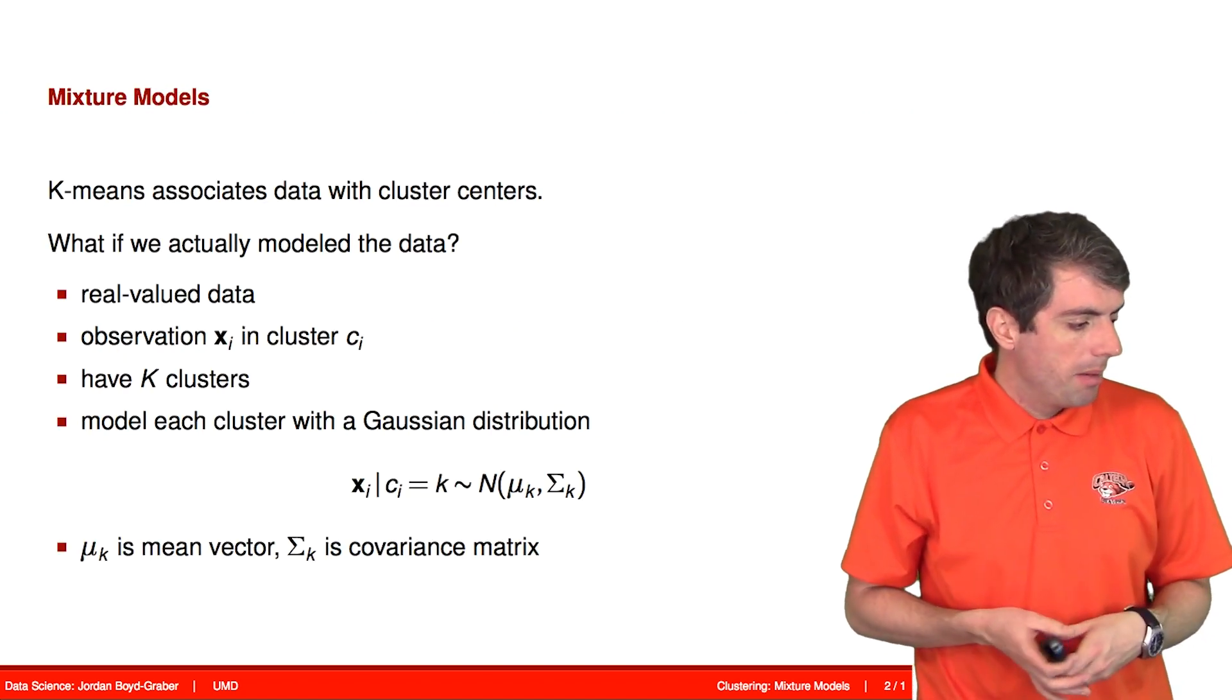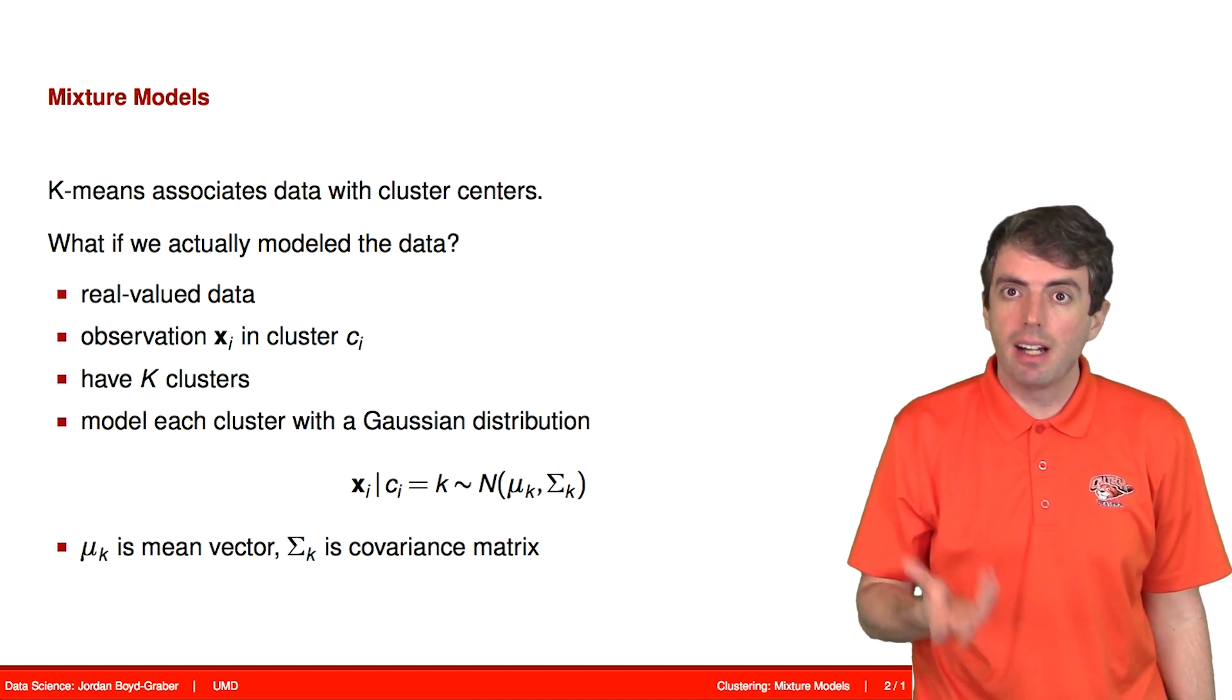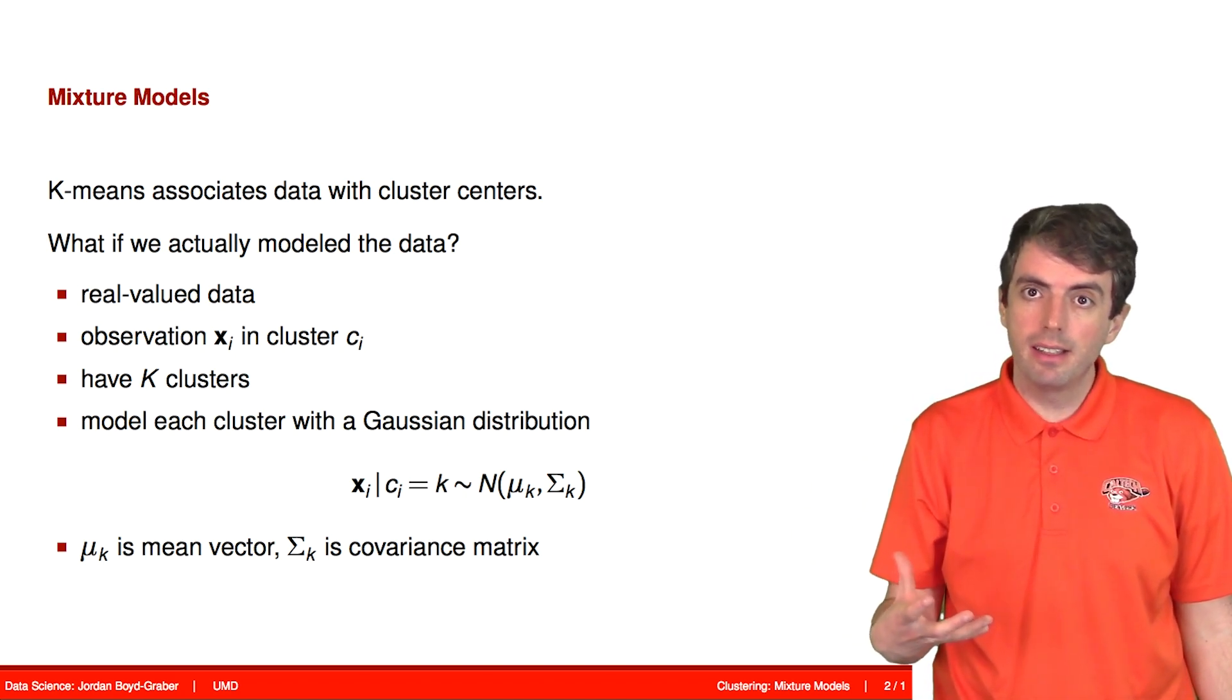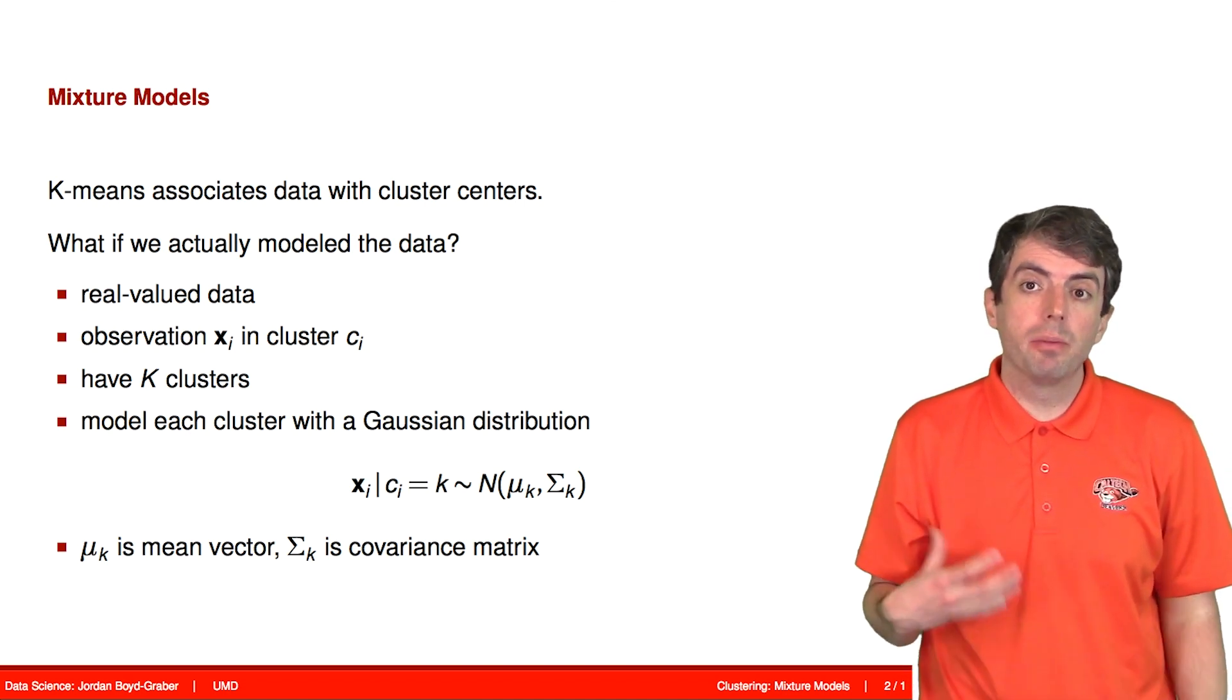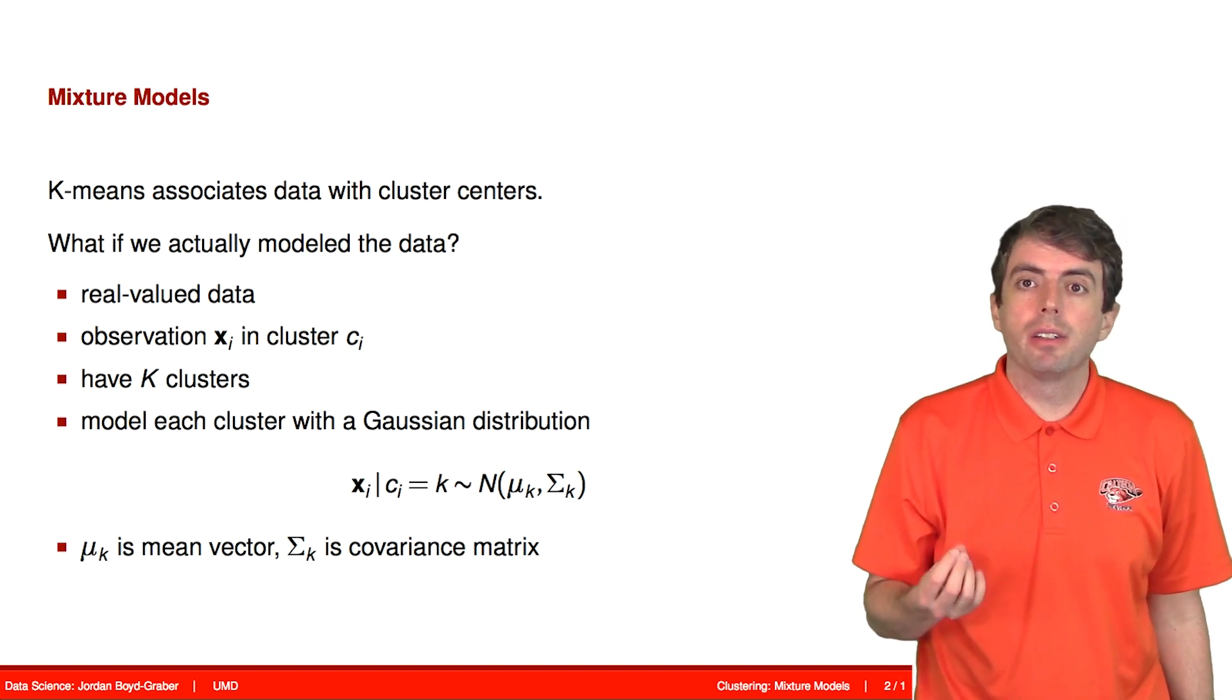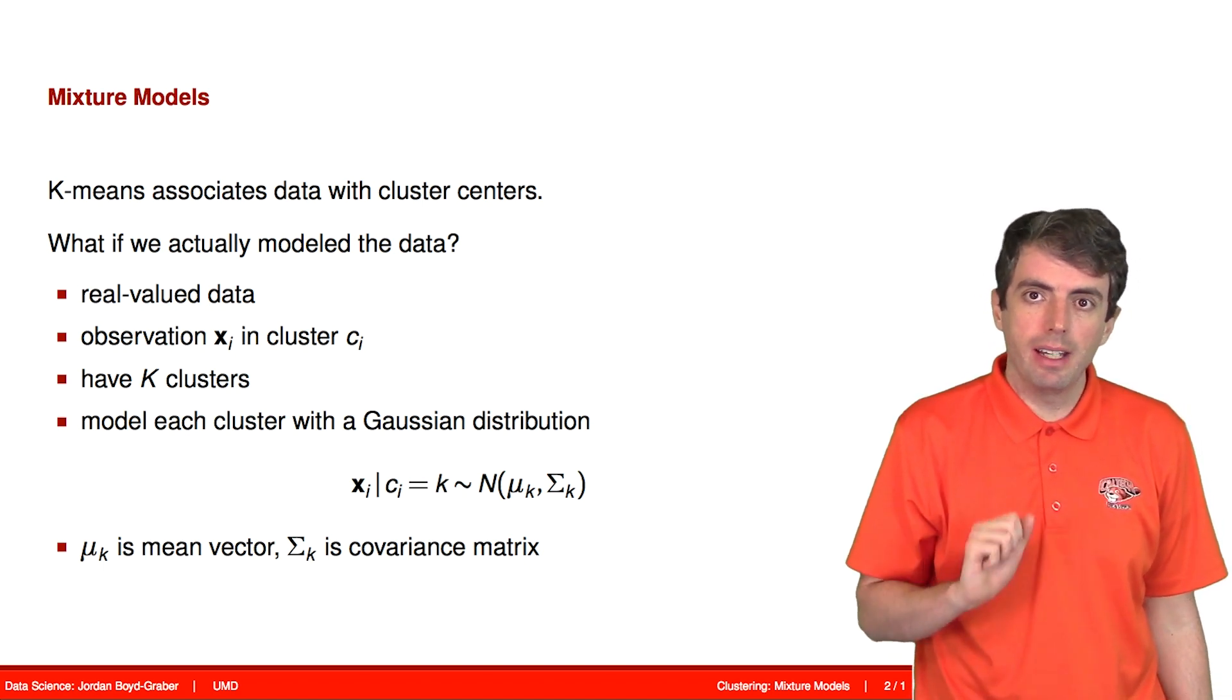So k-means is great, but it doesn't handle oddly shaped clusters. It can only find circular clusters because all of the distances are defined using Euclidean distance, which doesn't prefer one direction over another. So the way that we're going to deal with that is we're going to model our data. That is, for every cluster we're going to learn a Gaussian distribution that explains what that cluster looks like.